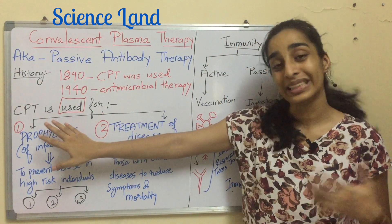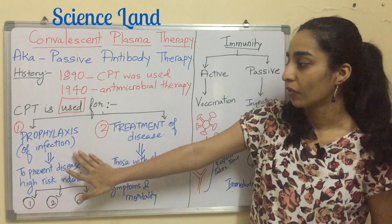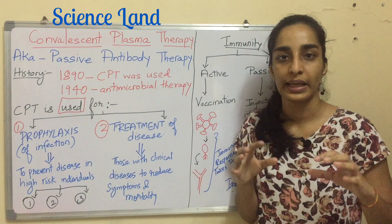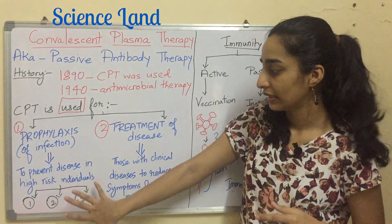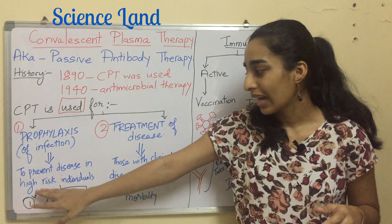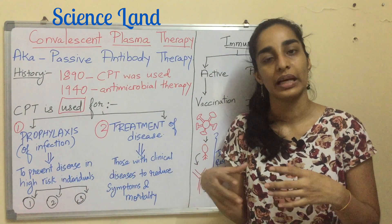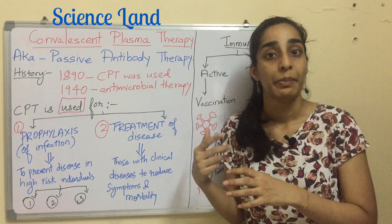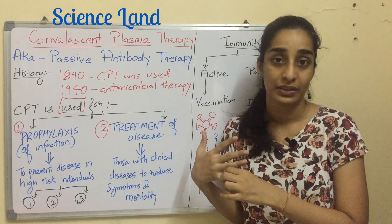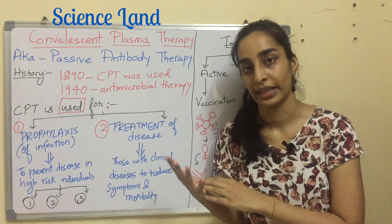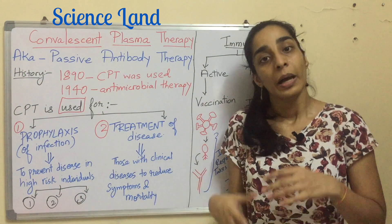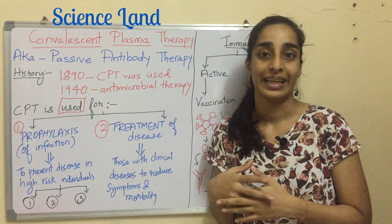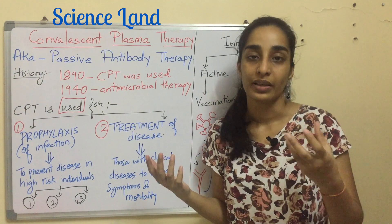Why is CPT used? There are two main reasons: prophylaxis of infection and treatment of the disease. Prophylaxis simply means prevention — to prevent the disease in high-risk individuals. High-risk individuals include healthcare workers, lab technicians, the diagnosis team, and anybody who is at high risk of getting the infection.